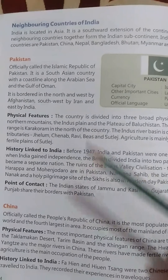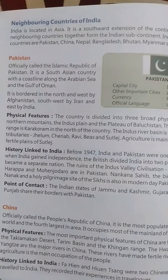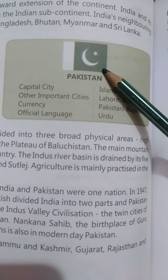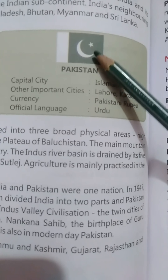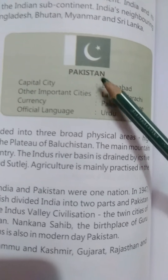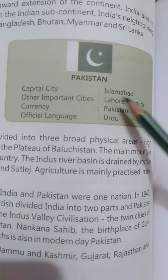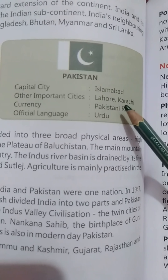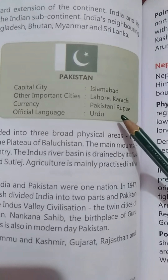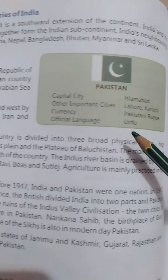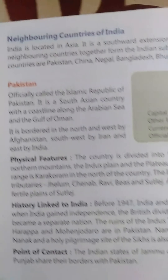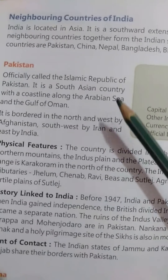So first we are going to start learning something about our neighboring country Pakistan. Come to this green color box here — let's try to see the flag of Pakistan. This is green and white in color with a moon and star in it. The capital city of Pakistan is Islamabad. Other important cities are Lahore and Karachi. The currency is known as Pakistani rupee, and the official language is Urdu. Pakistan is officially called the Islamic Republic of Pakistan.